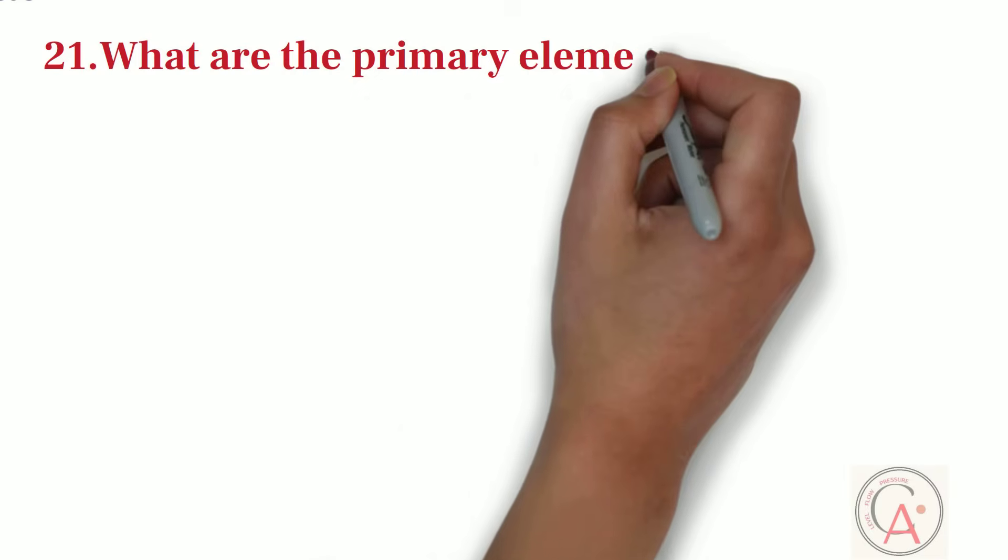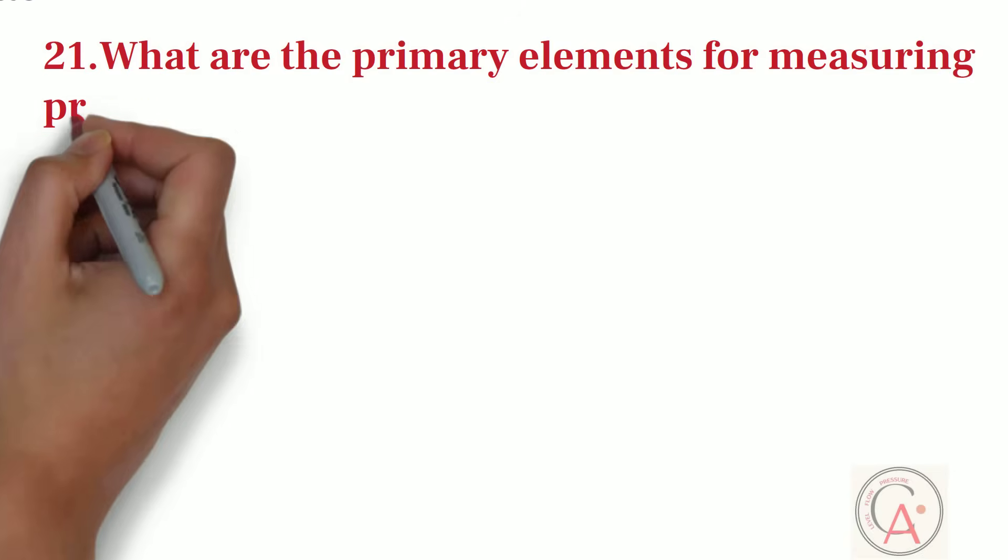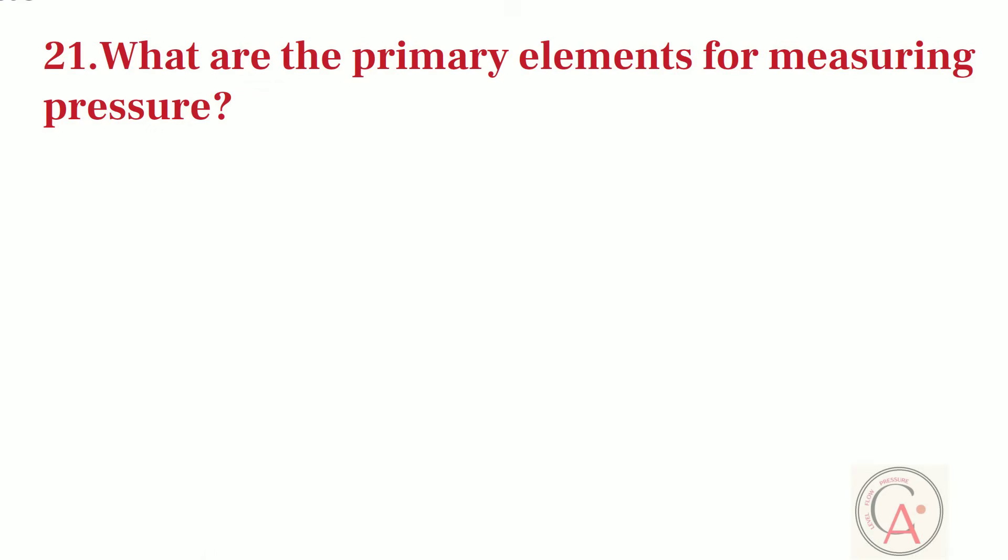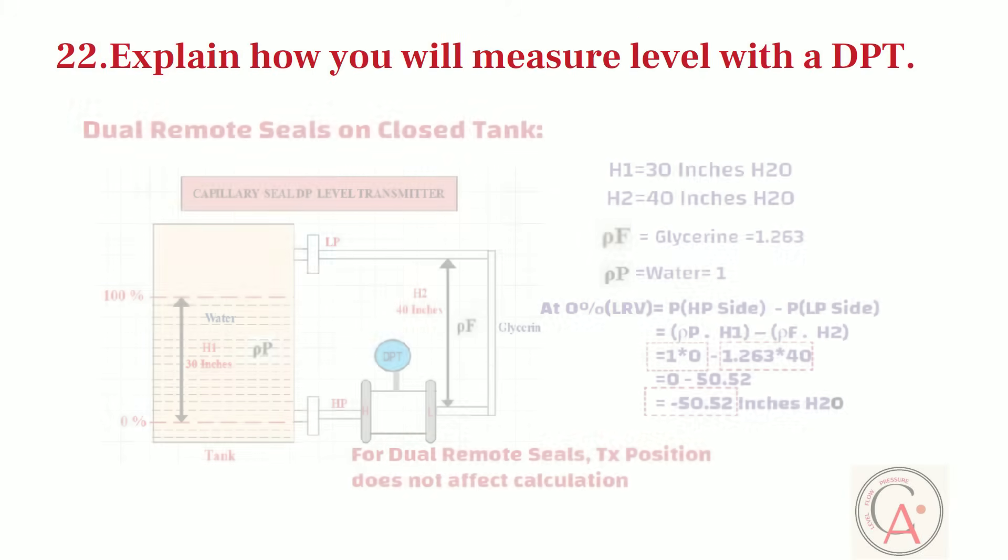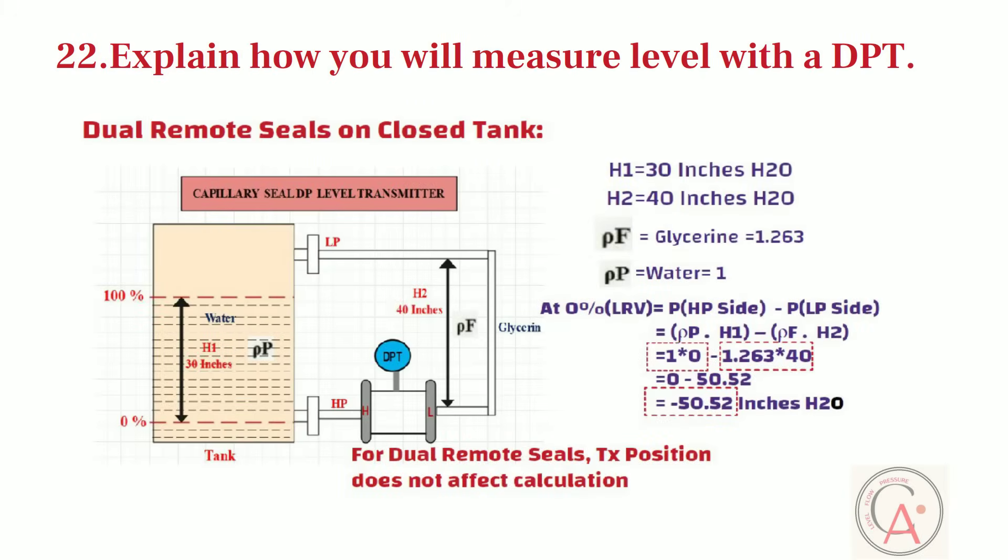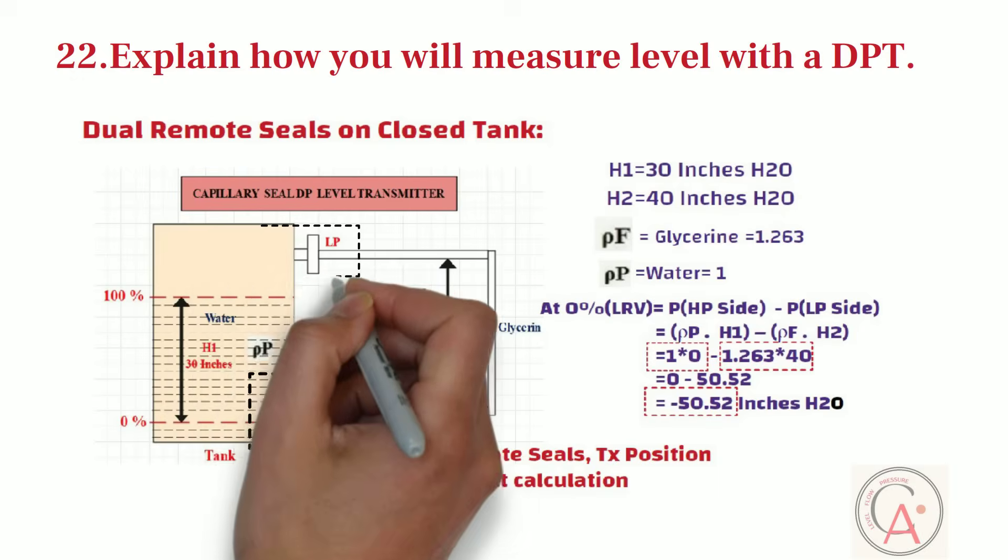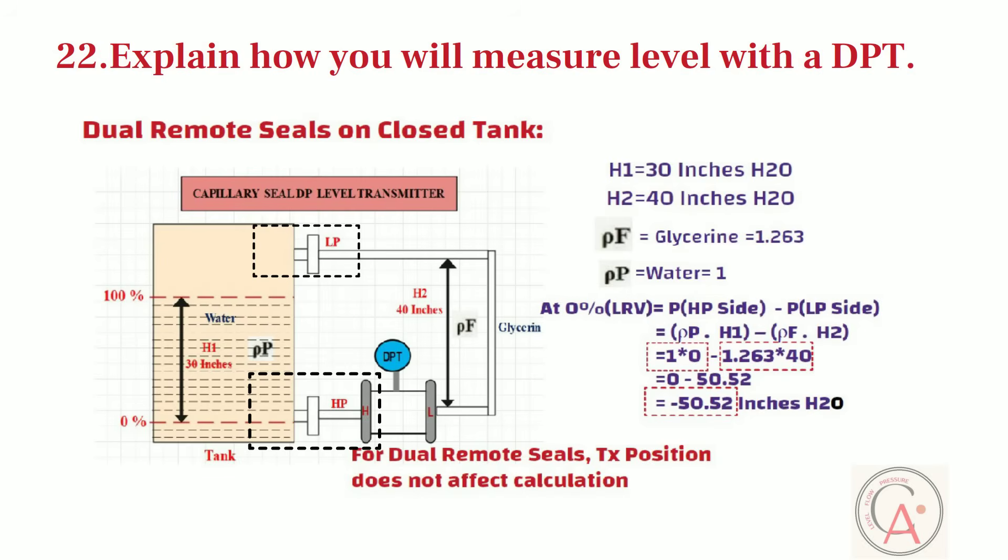Next question is, what are the primary elements used for measuring pressure? The primary elements used for measuring pressure are Bourdon tube, Diaphragm, Capsule, Bellows, Pressure springs. Next question is, explain how you will measure level with a differential pressure transmitter. To measure level with DPT, the bottom connection of the vessel is connected to high-pressure side of the transmitter, and top connection of vessel is connected to low-pressure side of DPT.